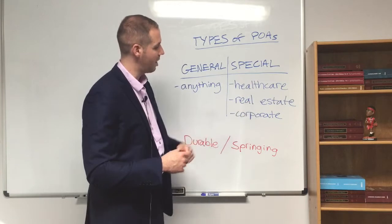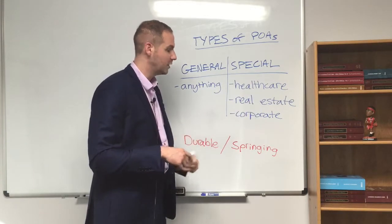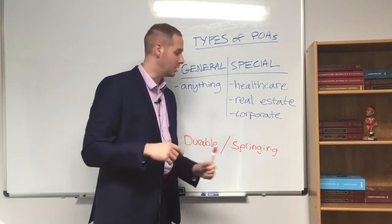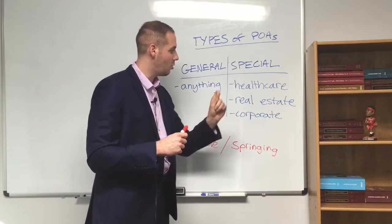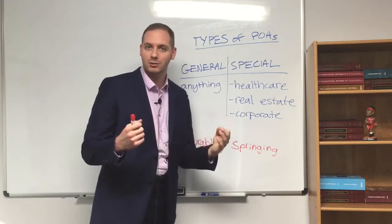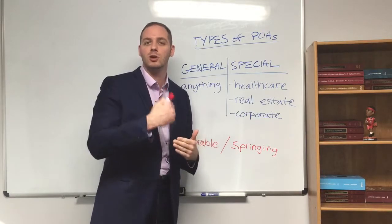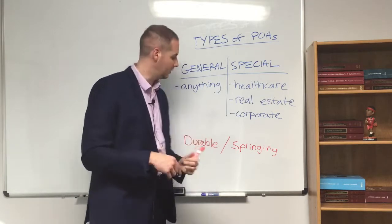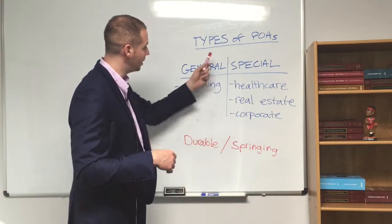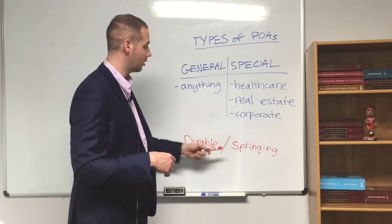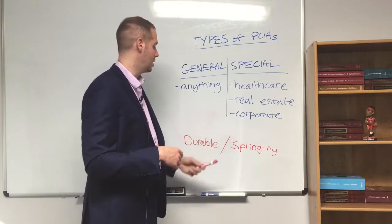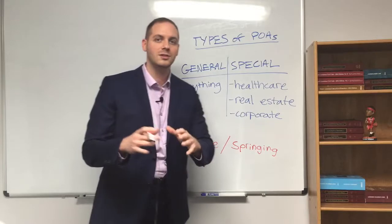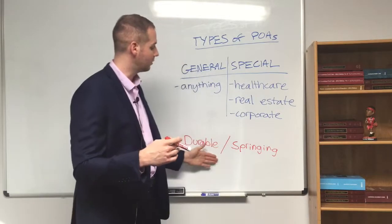Going back to the real estate power of attorney example, if closing is on a specific date, we would say the power of attorney springs into action — the agent's authority springs into action on that date and it wouldn't last beyond that period. It's not durable. The person couldn't run around making those transactions indefinitely. This language is included depending on the different types; you would specify whether it's going to be durable or springing for healthcare decisions or real estate. Generally it's durable for healthcare, but these are the different types of power of attorneys and the situations where you might need to make it durable or springing.